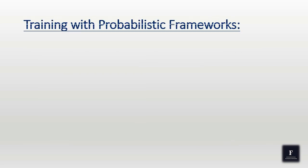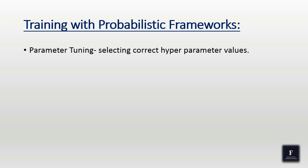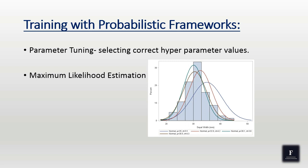The next method in machine learning is the training. Even the training is done with the probabilistic framework. Parameter tuning when selecting the correct type of parameter values. Maximum likelihood estimation is a method that adjusts the model parameters to efficiently train our machine learning model.